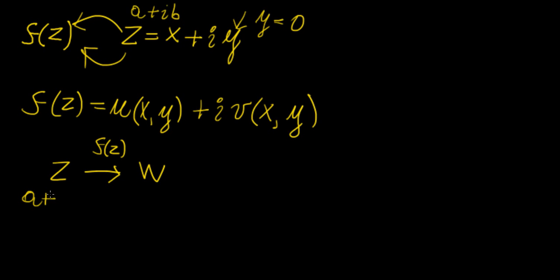So this might be a plus ib, and then the output is going to be c plus id. So this is just a transformation. It's just like a regular function takes a real value, transforms it into another real value. With the complex numbers, it happens the same.